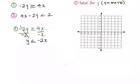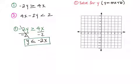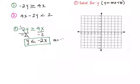Now that y is by itself, I can go ahead and graph this equation. With this equation, we can see that our slope is the number in front of x. What's the number in front of x? That's negative 2. I can always put a whole number over 1, so I know what my rise over run is.